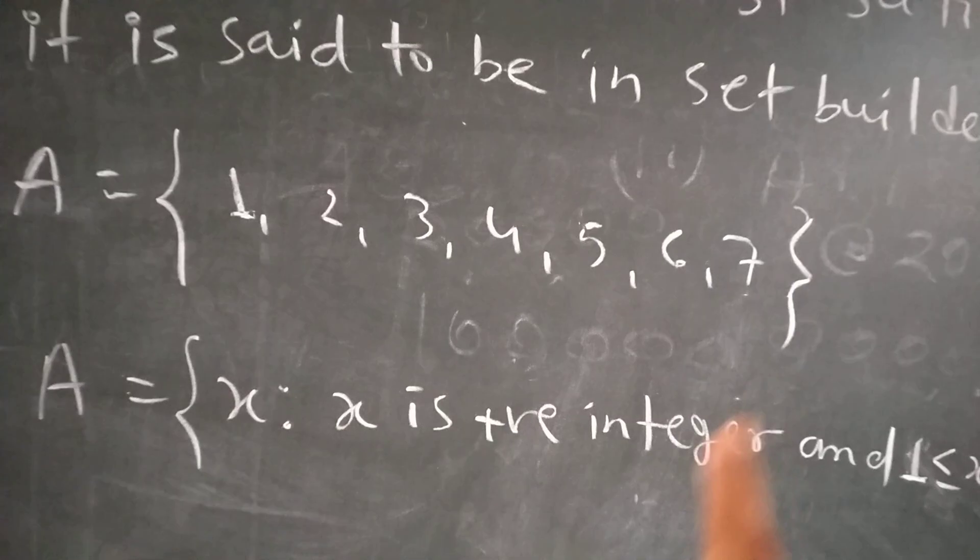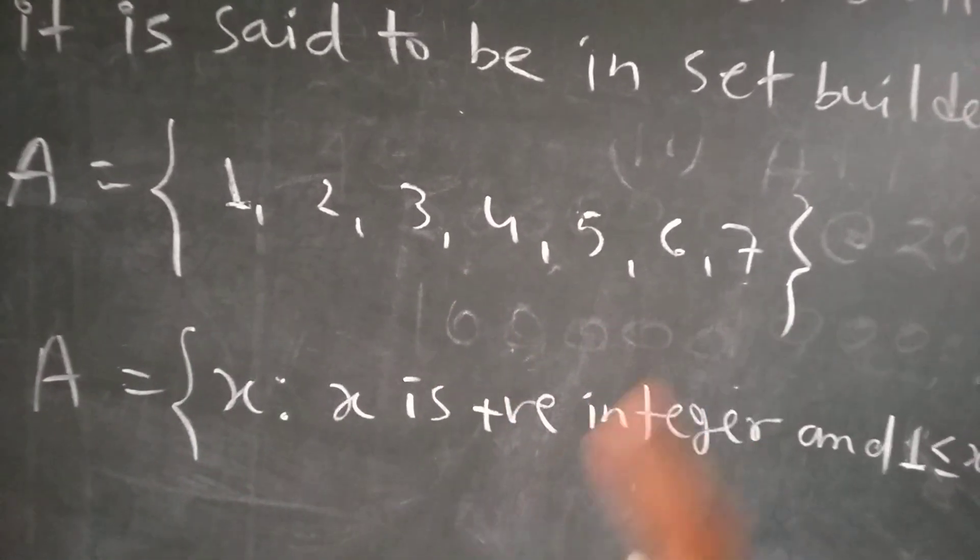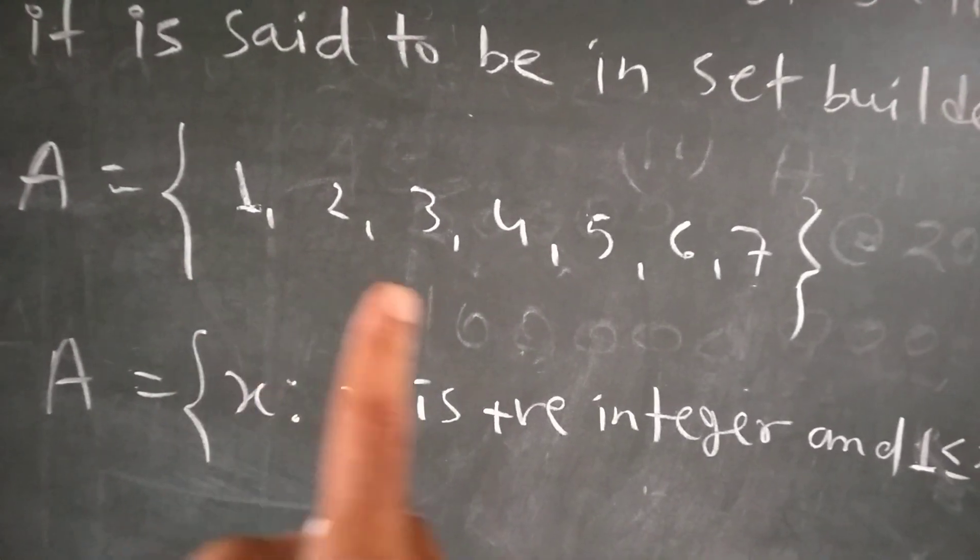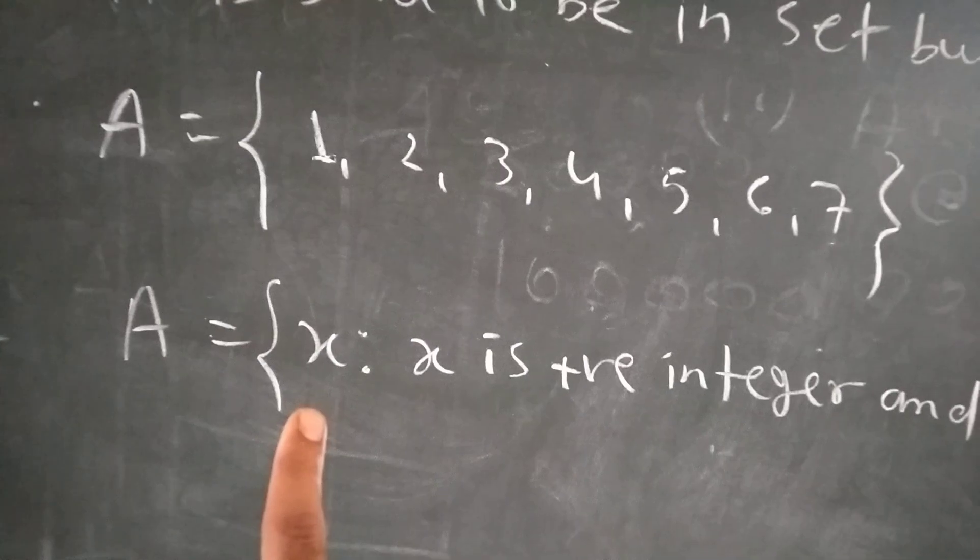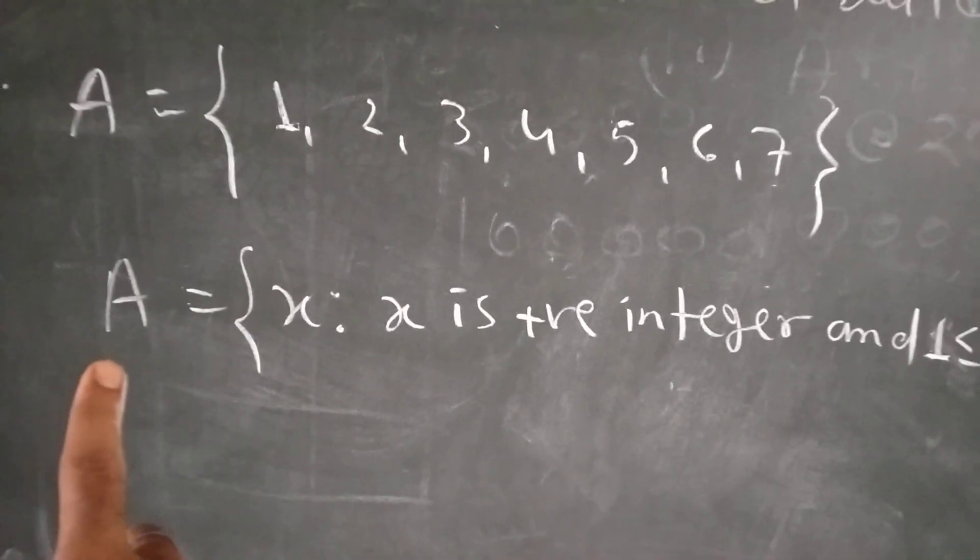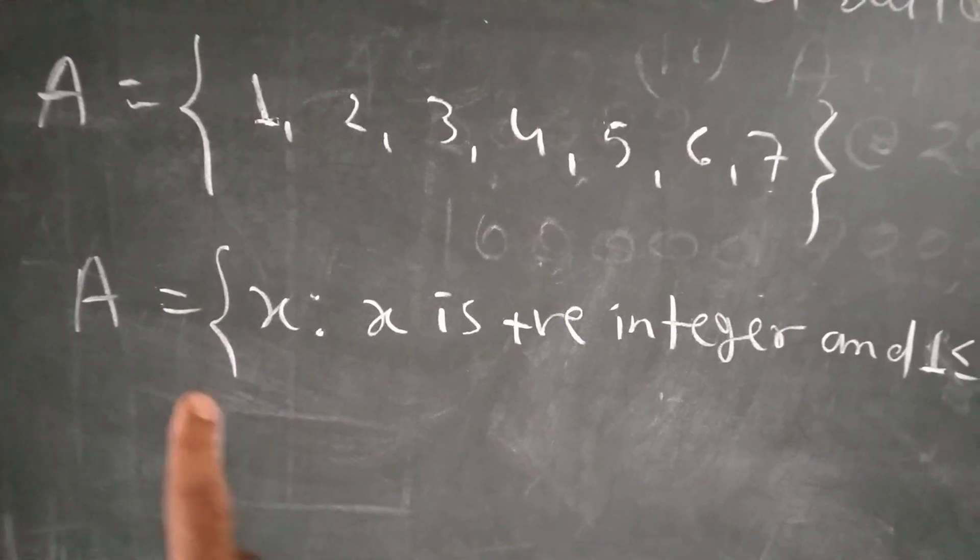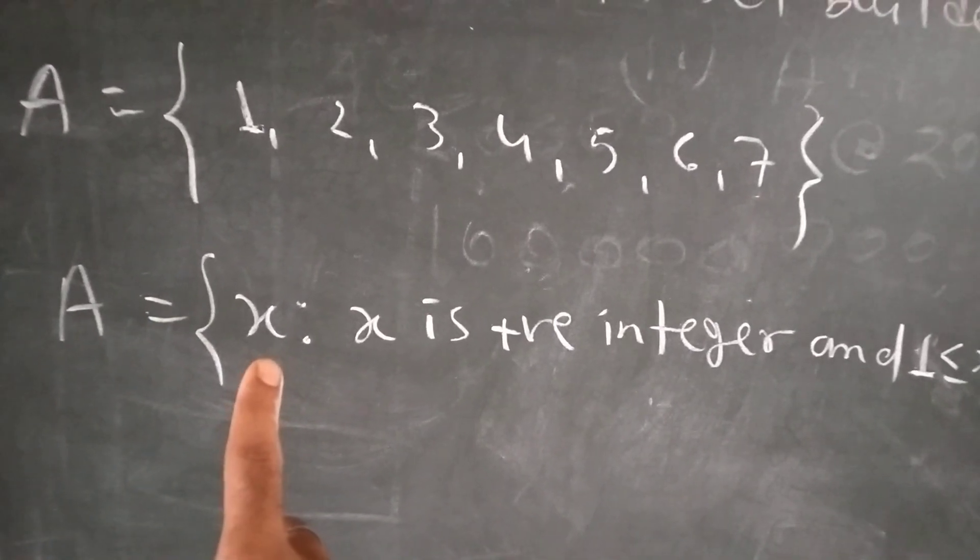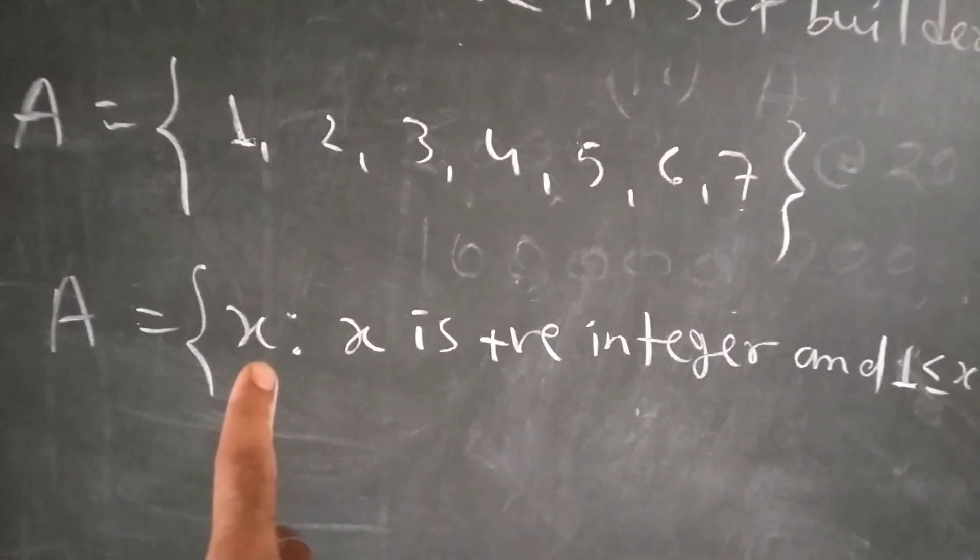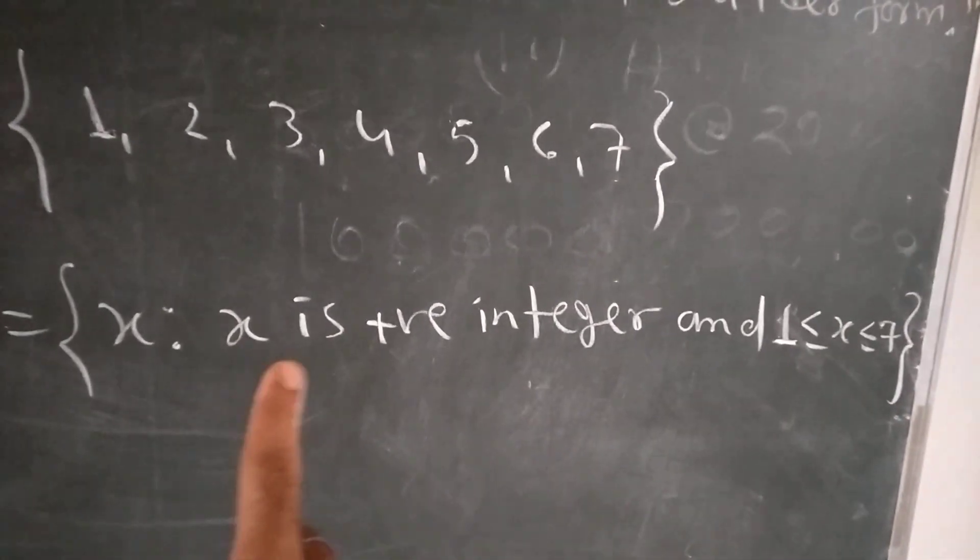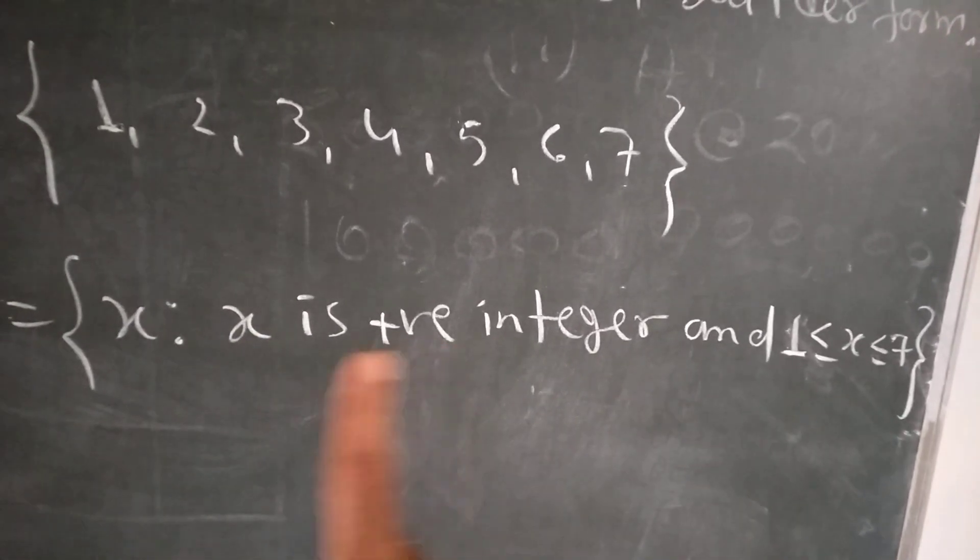We can also say the first seven natural number. In Hindi, we can also say the first seven positive integer. This is a set of all elements. This colon we can read such that. Now we can tell about the property. What is the same? The set is a positive integer.